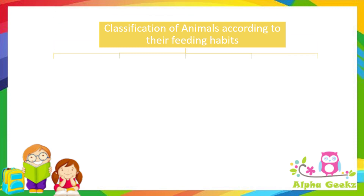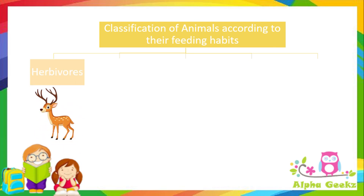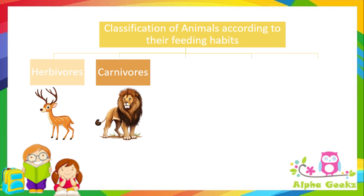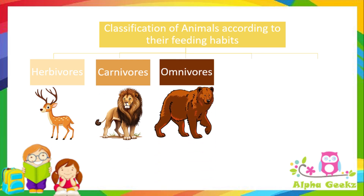These include herbivores, which are the animals that eat only plants. Carnivores are animals that eat only the flesh of other animals. Omnivores are animals that eat both flesh and plants.